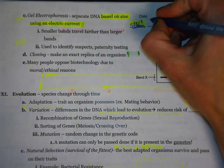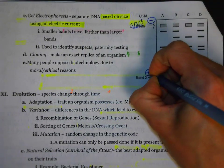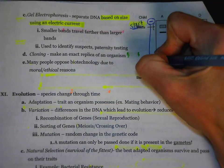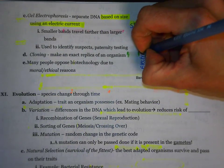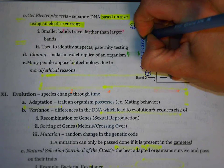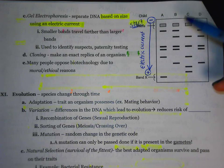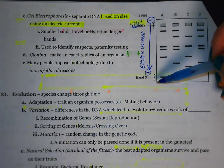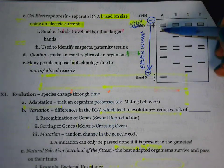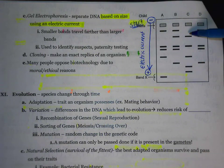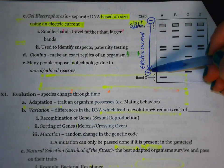Then you run an electric current. On one side it's negative, and on the other side it's positive. Because of that, DNA runs out of the well. DNA has a negative charge, so it's attracted to the positive side — that's what the electric current does. If you don't have the electric current, the DNA would just stay in the well. Once you flip on the switch, the DNA is attracted to the positive side.